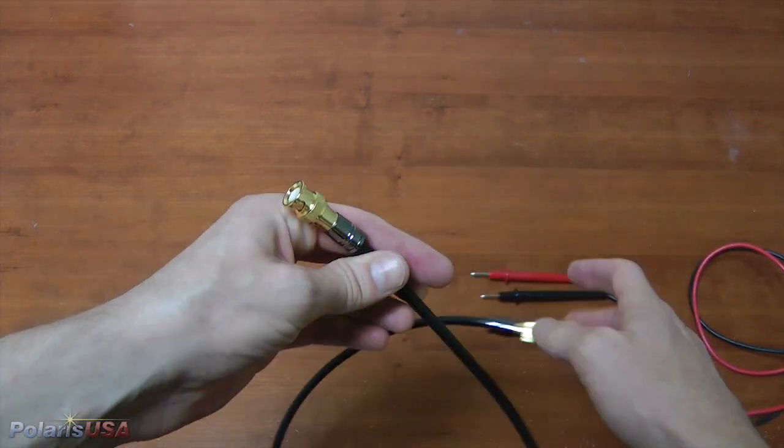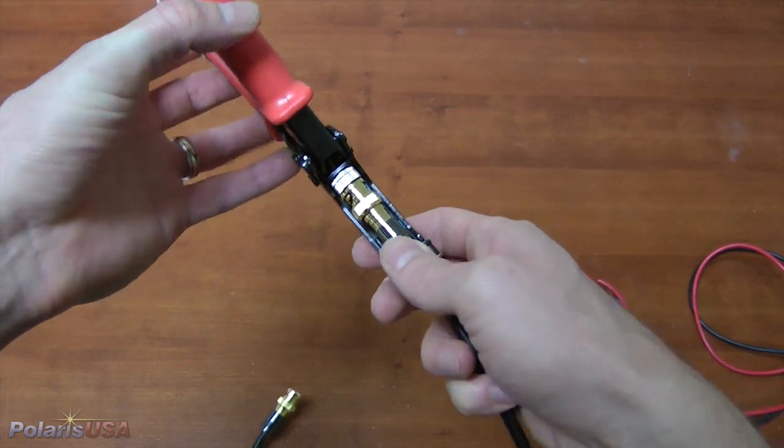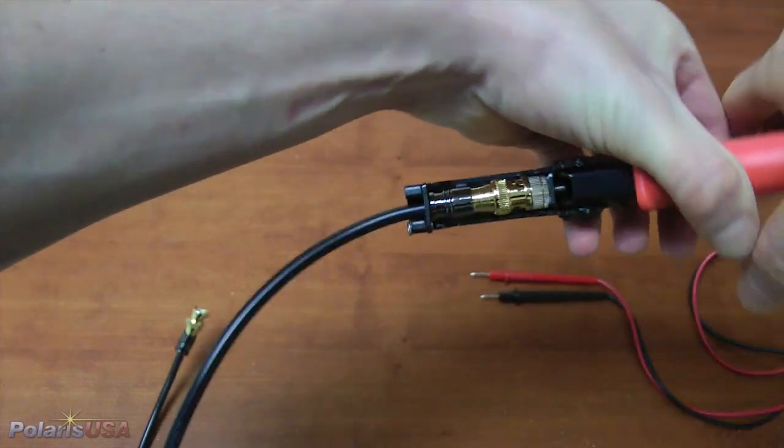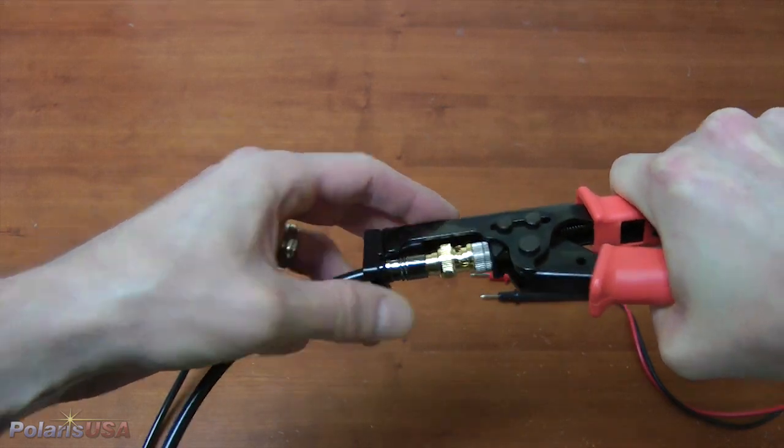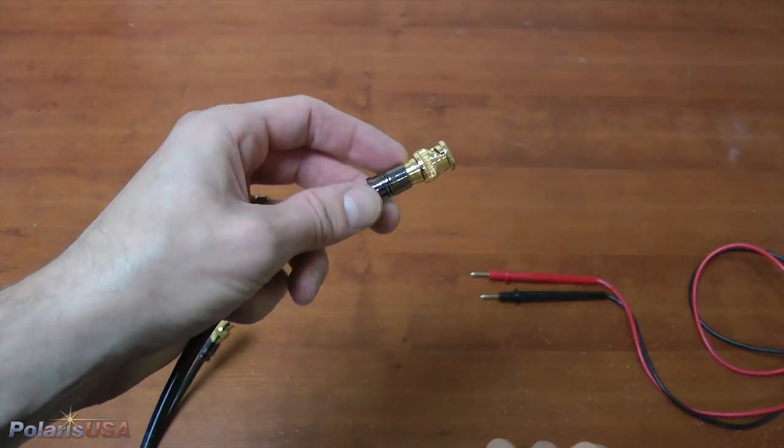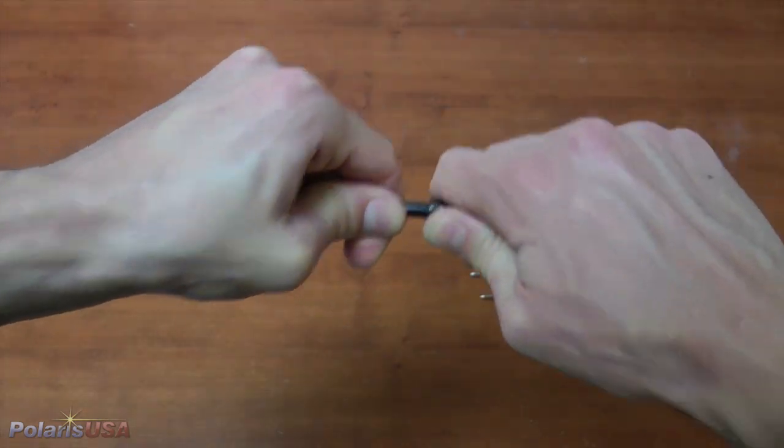Now that I've verified continuity, I'll compress the connector. And again, I should have a solid connection that I cannot remove with force.